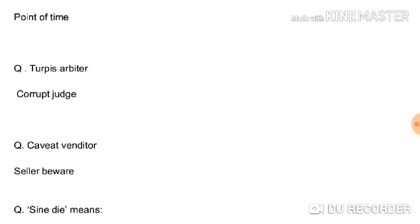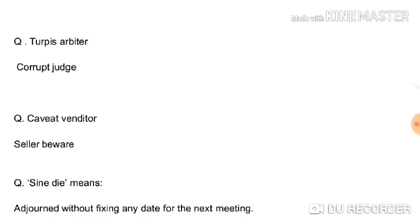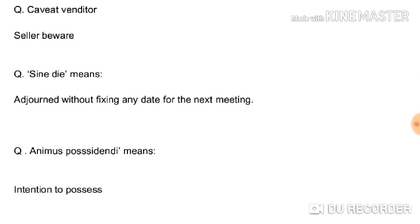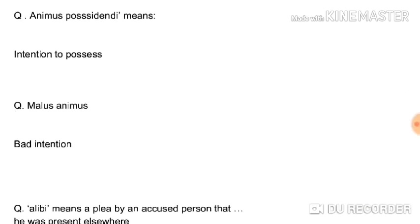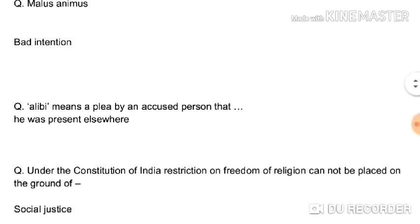Caveat venditor means seller beware, and caveat emptor means buyer beware. Sine die means adjourned without fixing any date for the next meeting. Animus possidendi means intention to possess. Malus animus means a bad intention or malafide intention — for example, when plaintiff A appears before the court wanting to inflict harm on B who is innocent, that collusion or malafide intention of A is called malus animus.